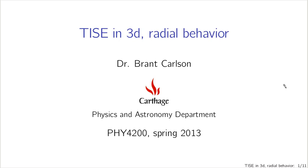Continuing our discussion of the time-independent Schrödinger equation in three dimensions in spherical coordinates, let's talk about the radial behavior. We saw that the angular behavior in theta and phi gave rise to spherical harmonics, but we left off the radial part. So let's see what the radial part looks like and what it gets us.